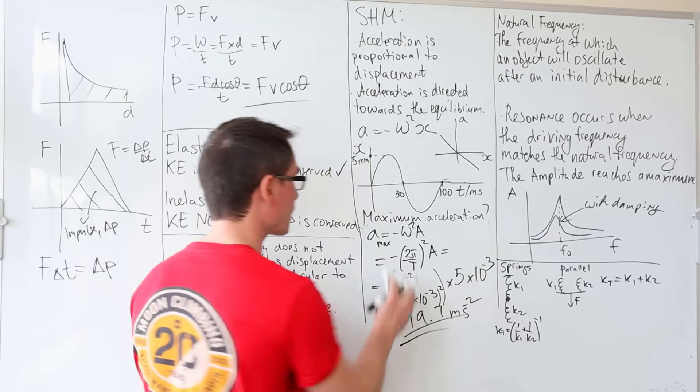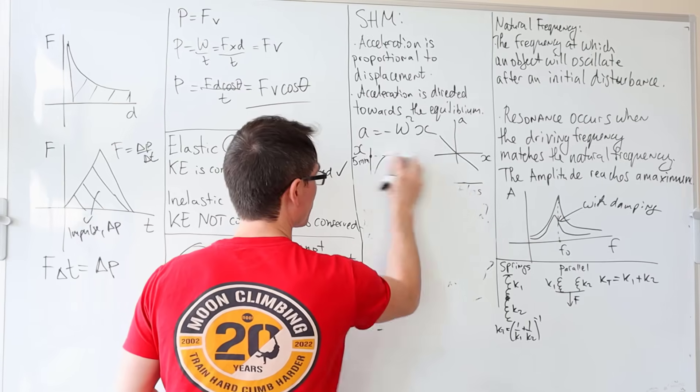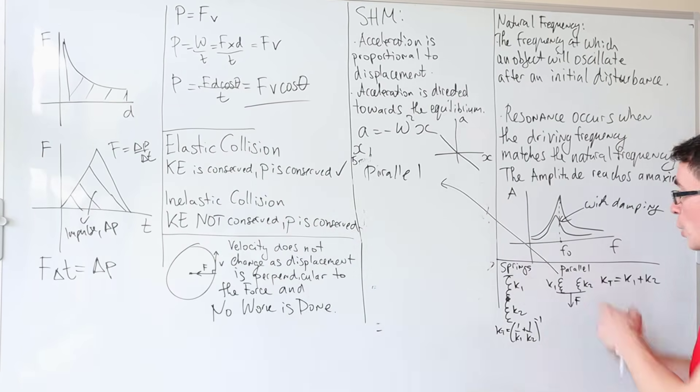Now, why are those rules like that? You may be asked to derive them and the derivation is actually quite easy. So if they are actually in parallel, then the actual force is distributed between the two. So we have F₁ and F₂. So I can say that in parallel,